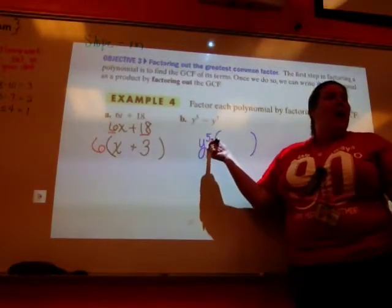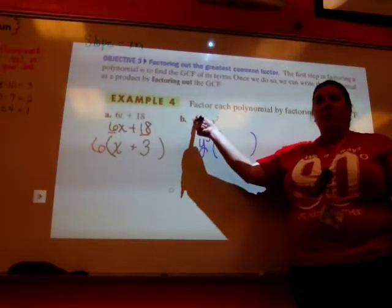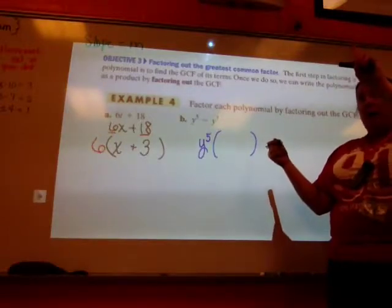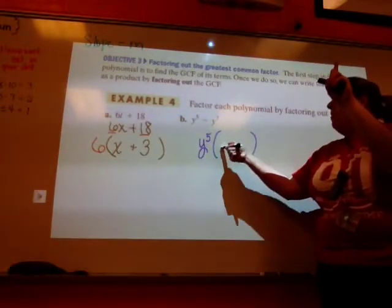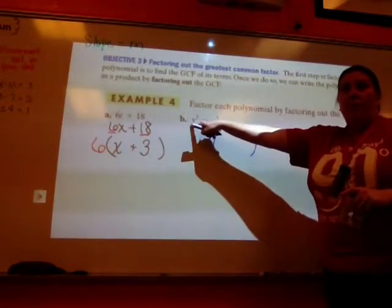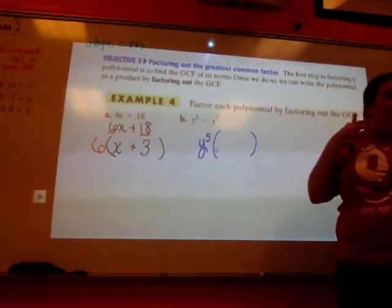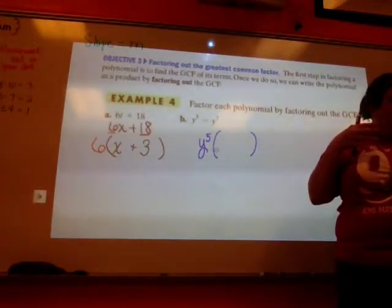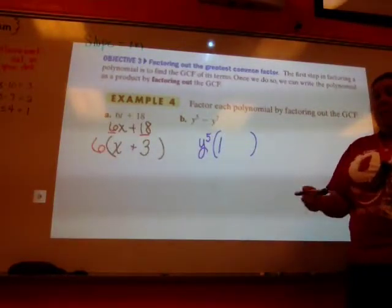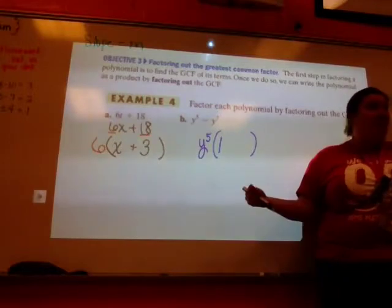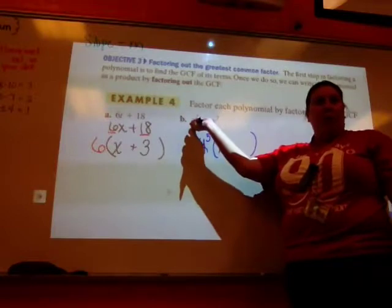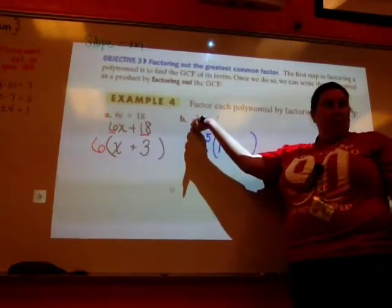So if I have, if I'm taking all 5 of them, what do I have left? A 1, right? Because there has to be something there that I can multiply y to the 5th by to get y to the 5th. Because I'm taking all of the y to the 5, or I'm taking all of the y's. Does that make sense? So I have to put a 1 there. Because if I don't put a 1, and I put a 0, y to the 5th times 0 is just what? 0. And I've got to have something that I can put y to the 5th there with.